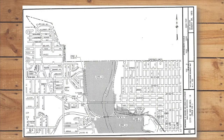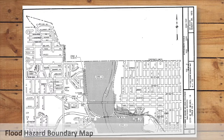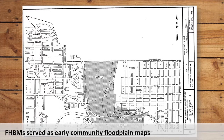These approximate determinations of the boundaries of the special flood hazard area were shown on maps known as flood hazard boundary maps. Flood hazard boundary maps served as the official NFIP floodplain maps when many communities first joined the NFIP.